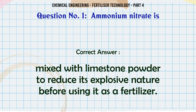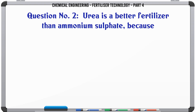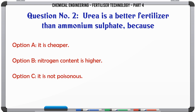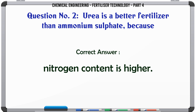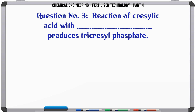Urea is a better fertilizer than ammonium sulfate because: a. it is cheaper, b. nitrogen content is higher, c. it is not poisonous, d. it is easy to manufacture. The correct answer is: nitrogen content is higher.